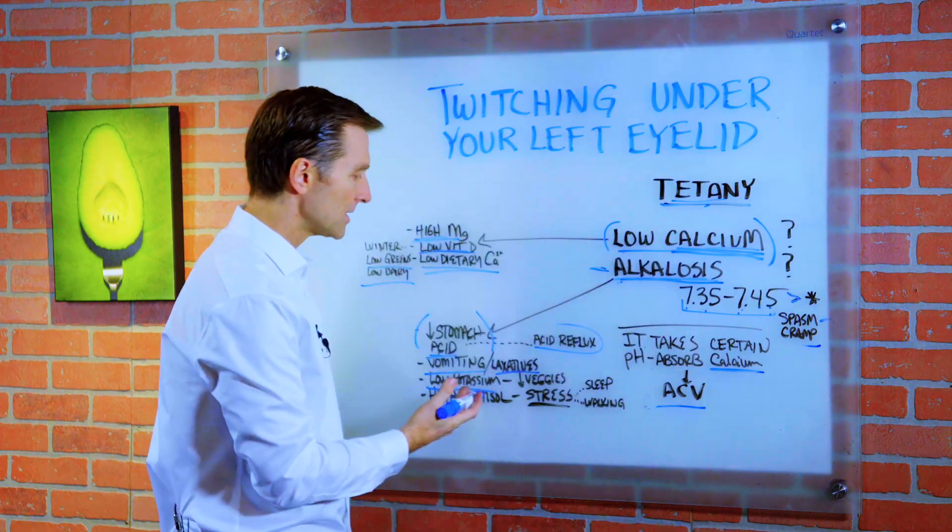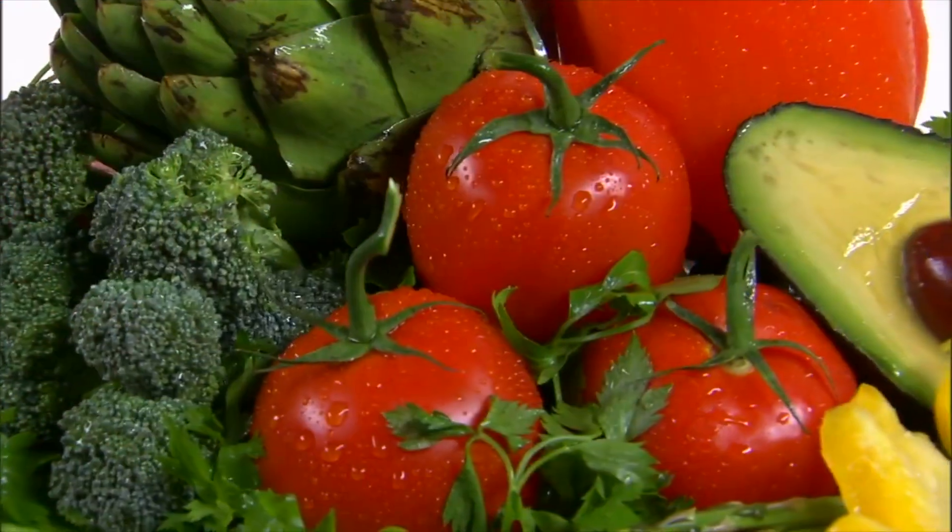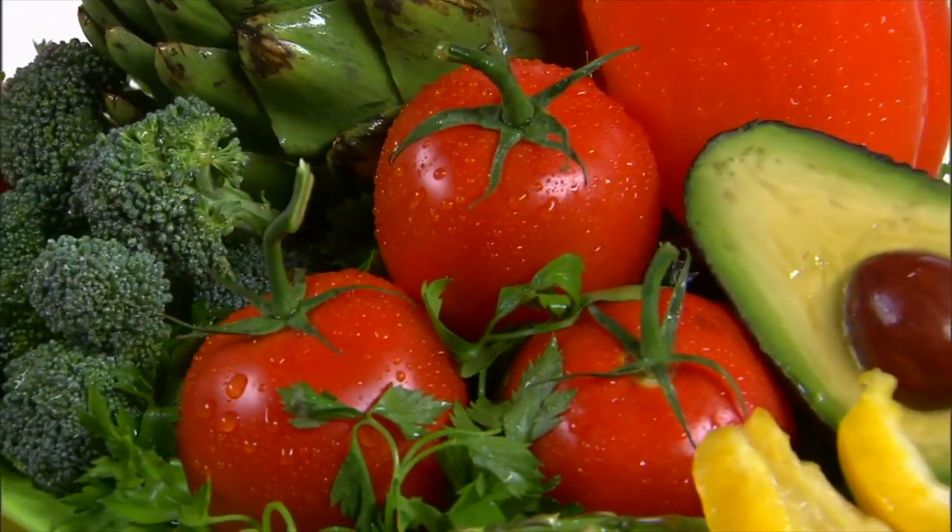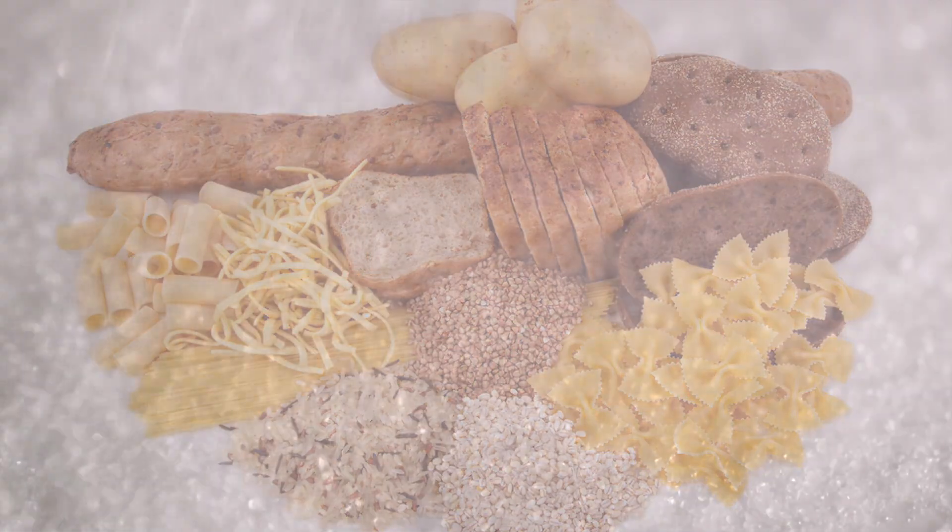Low potassium can also cause alkalosis. How do you become low in potassium? It could be you're not consuming enough vegetables. It could be your carbohydrates are too high. You're eating too much sugar. That's a common thing.